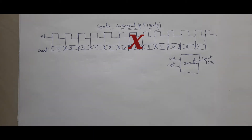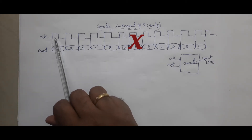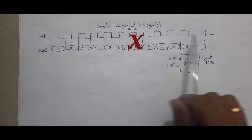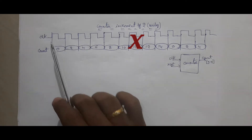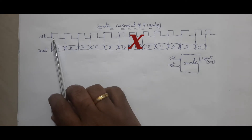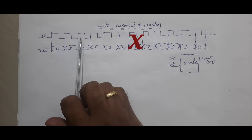First you have to understand what is a counter incremented by 2. This counter is a sequential circuit — we require the clock for that. I am drawing some clocks here. If you observe properly, each clock edge your counter is incremented by 2.